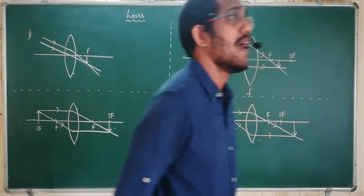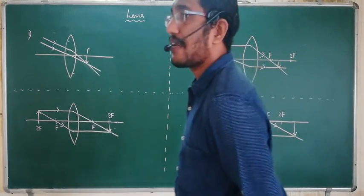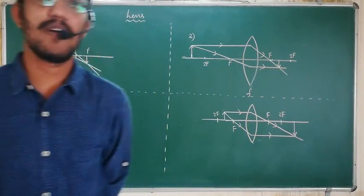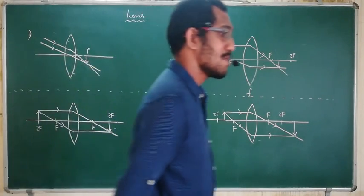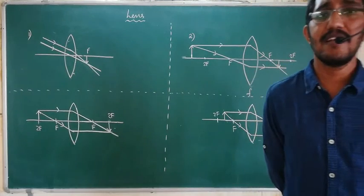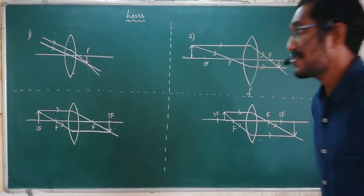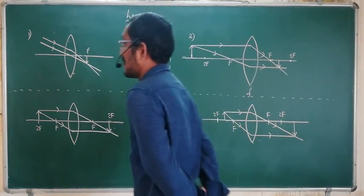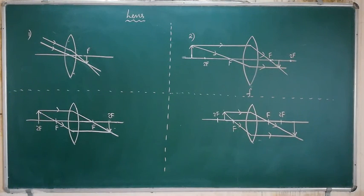So, a lens is a transparent medium having two refracting surfaces, out of which at least one refracting surface is a curved one — either curved or spherical. If the surface is spherical, then the lens is called a spherical lens. Convex lenses are converging lenses and concave lenses are diverging lenses. We will now see the image formation for a convex lens.